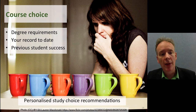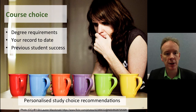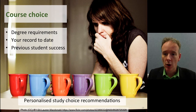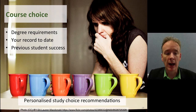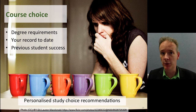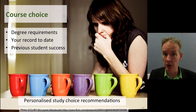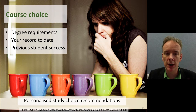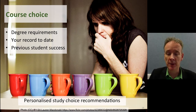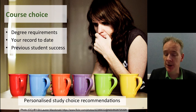The next example is course choice models. These are predictive models that help students with their study choice. As inputs, they take the degree requirements, your record to date as a student, and how other students who went on to succeed did. The algorithm generates personalised study choice recommendations. It can say, given that you want to do this degree and you've done this well in these subjects, you're probably well advised to do this path next — perhaps because you did very well on the maths courses, suggesting the high-maths track will be a good idea. How that's implemented will make a big difference.